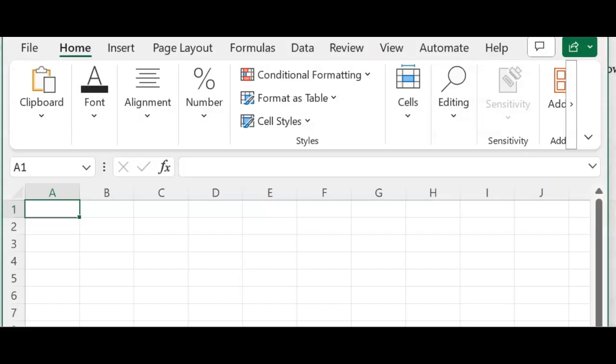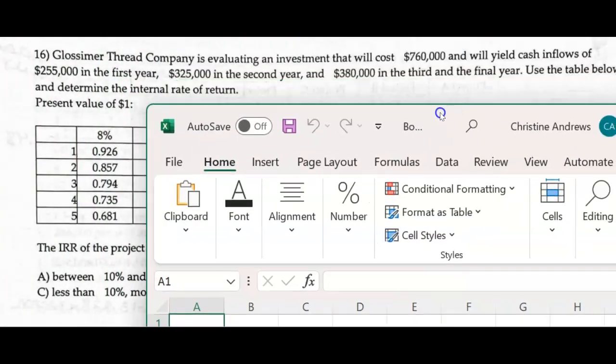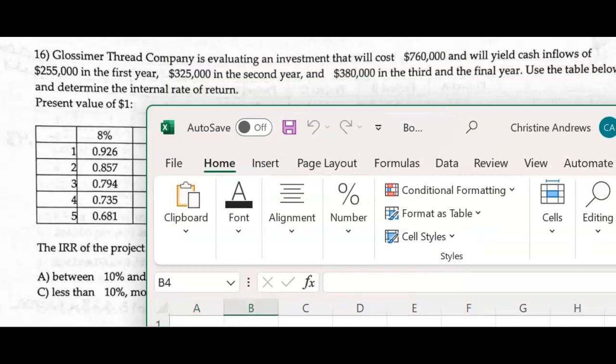What we can do is just use Excel on this. I've got to get the amounts, and we have in our first year we've got $760,000 going out, and then we'll get $255,000, and $325,000, and $380,000.